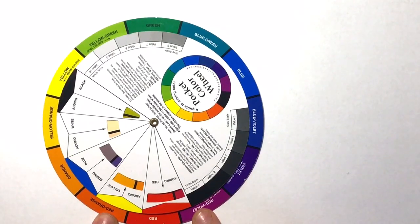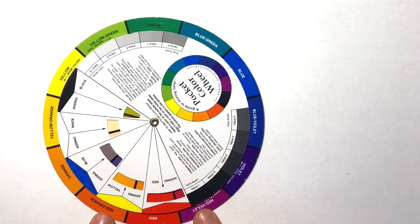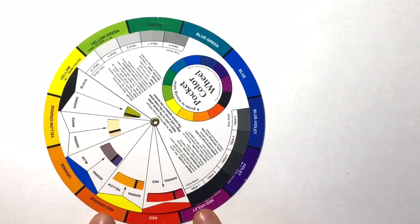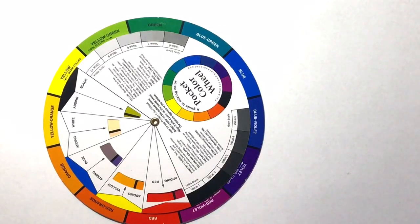So instead of choosing that directly opposing color, we're splitting across and choosing the two next to it. This makes your pictures pop just the same, but it gives you a few more color choices and it's ever so slightly more toned down, so it's not super in your face.